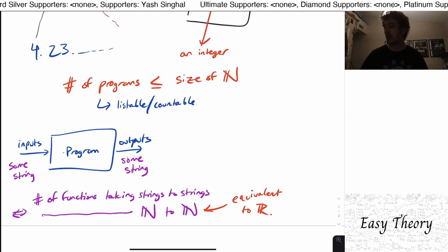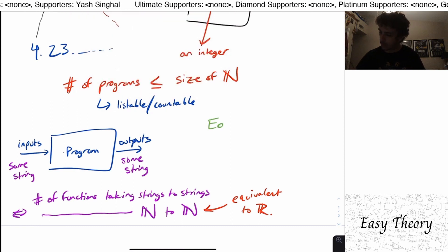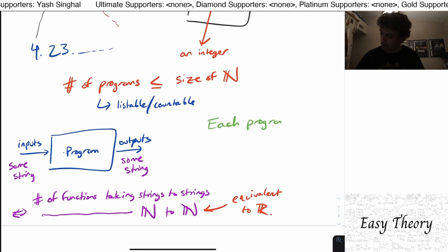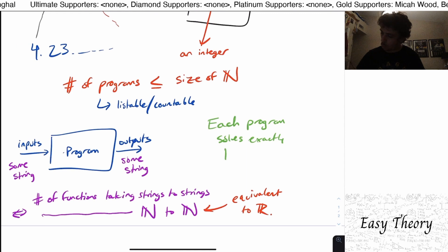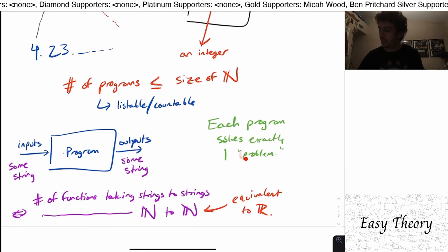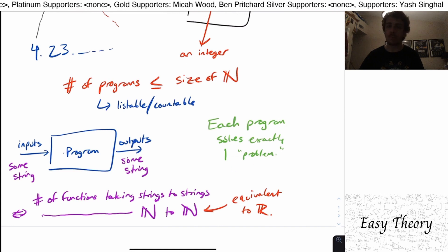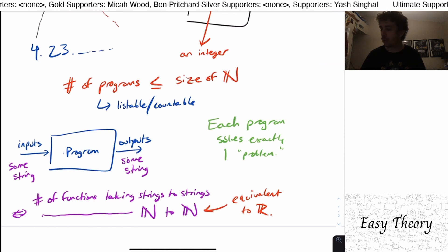And crucially each program can solve only one problem. So each program solves exactly one problem. So that means that the number of problems that are solvable by our program or our set of programs is countable. Because each program only solves one. Maybe two of them happen to solve the same one. But we don't really care about that. Each program only solves one of them.